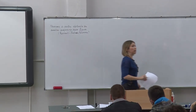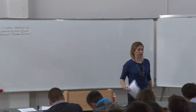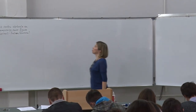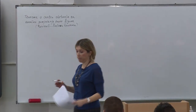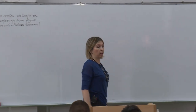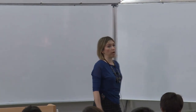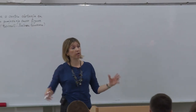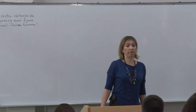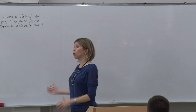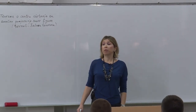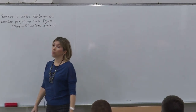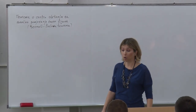Ova teorema je poznata i kao Bernoulli-Šalova teorema, pa ćemo i taj naziv u zagradi navesti. Šta govori ova teorema? Govori o tome da se ravna figura — još smo na terenu ravnog kretanja i ona ravna figura koja reprezentuje tijelo koje vrši ravno kretanje — može prevesti iz nekog položaja 1 u konačni položaj 2 jednim obrtanjem oko tačke koju nazivamo centar konačne rotacije ili centar konačnog obrtanja.